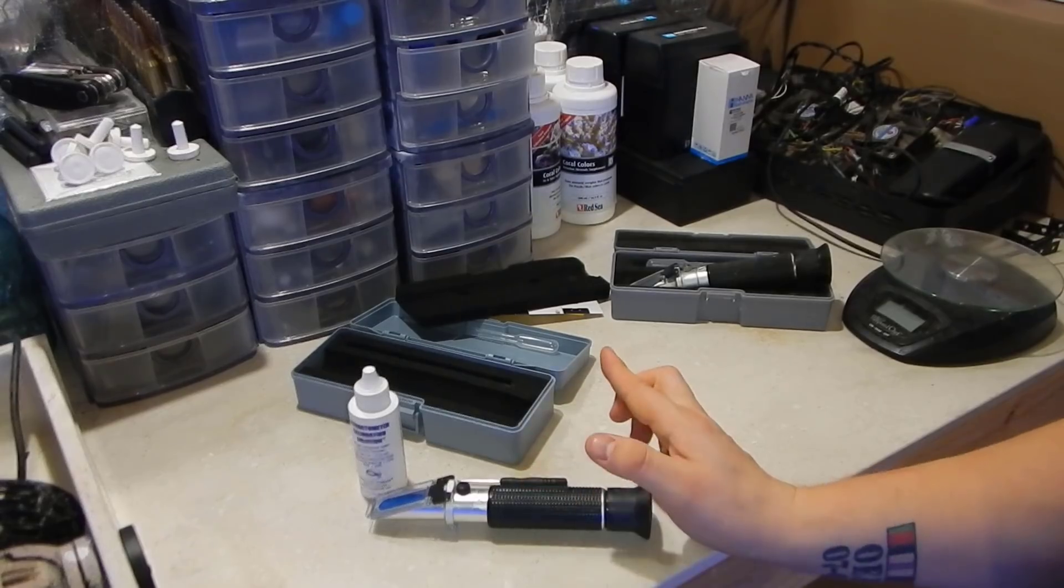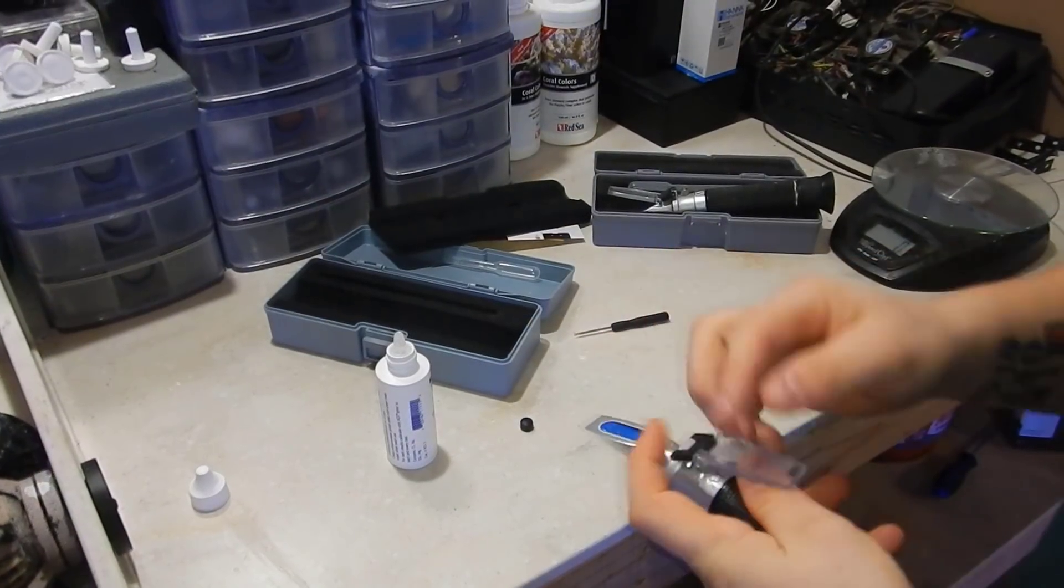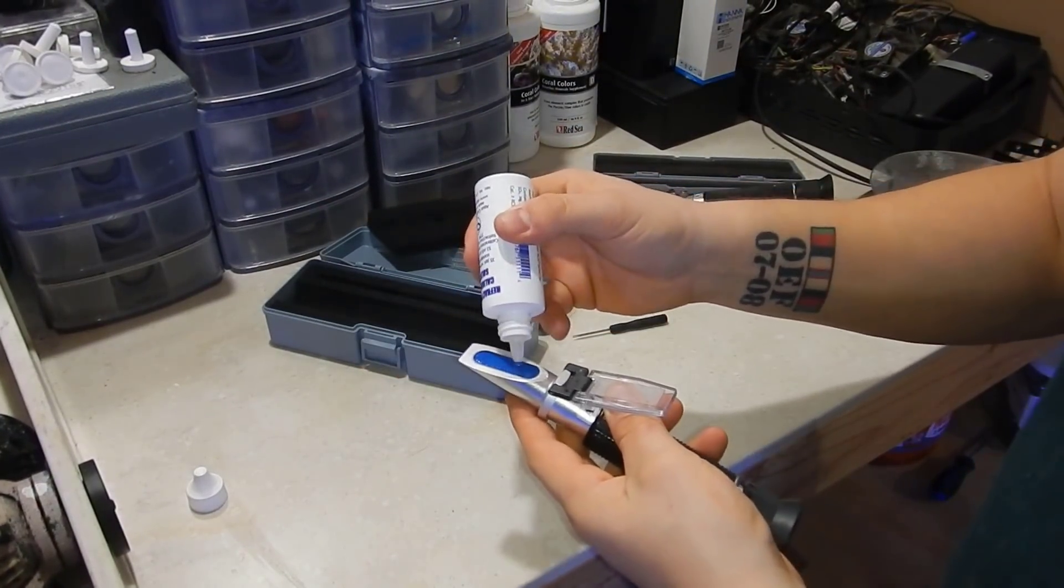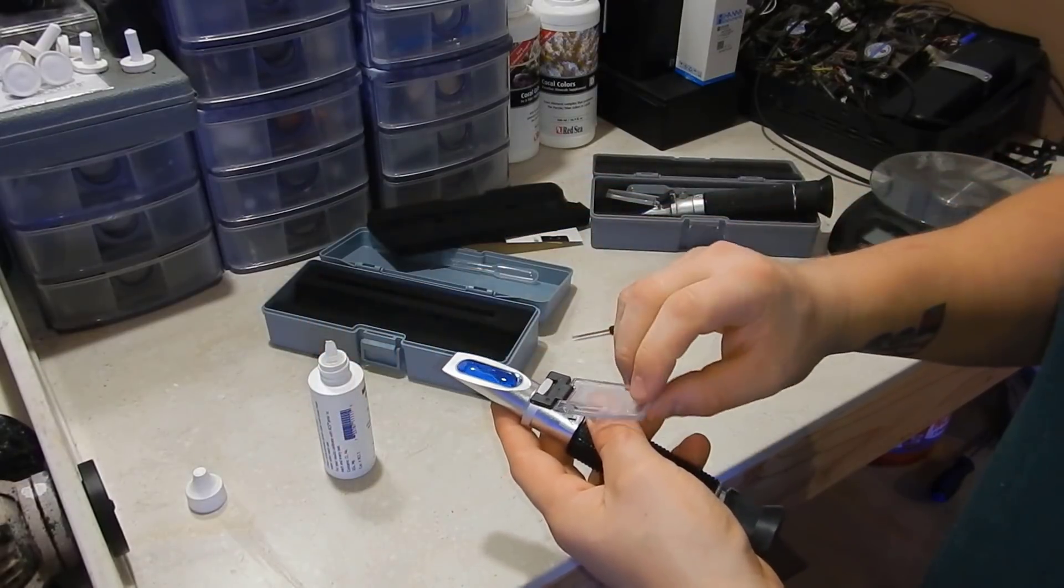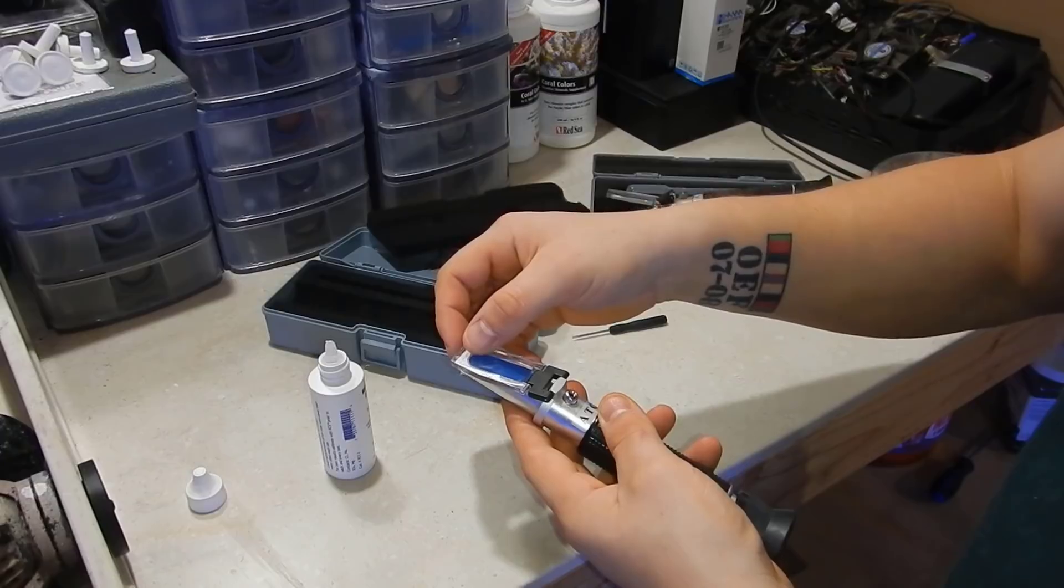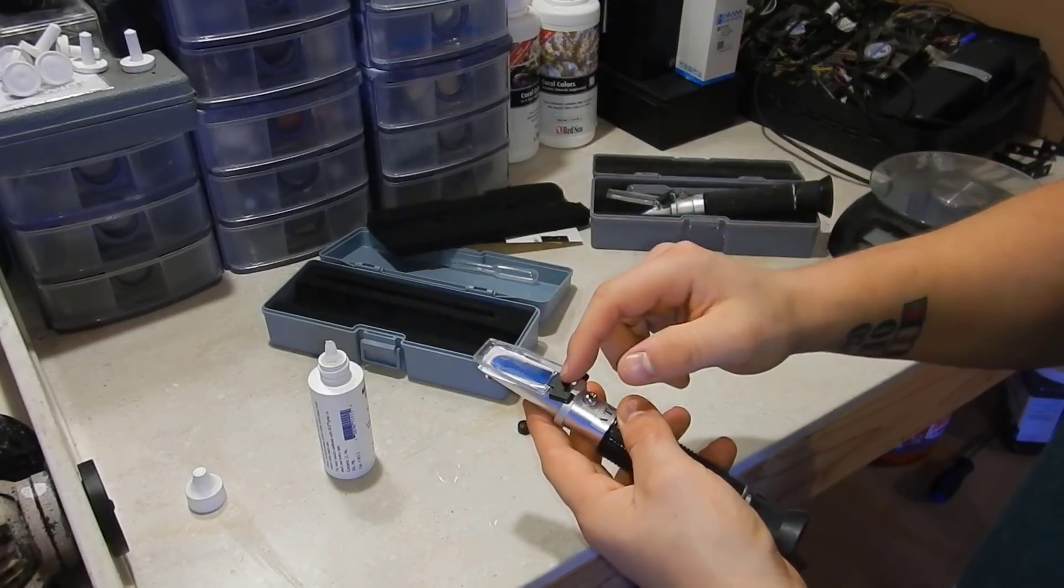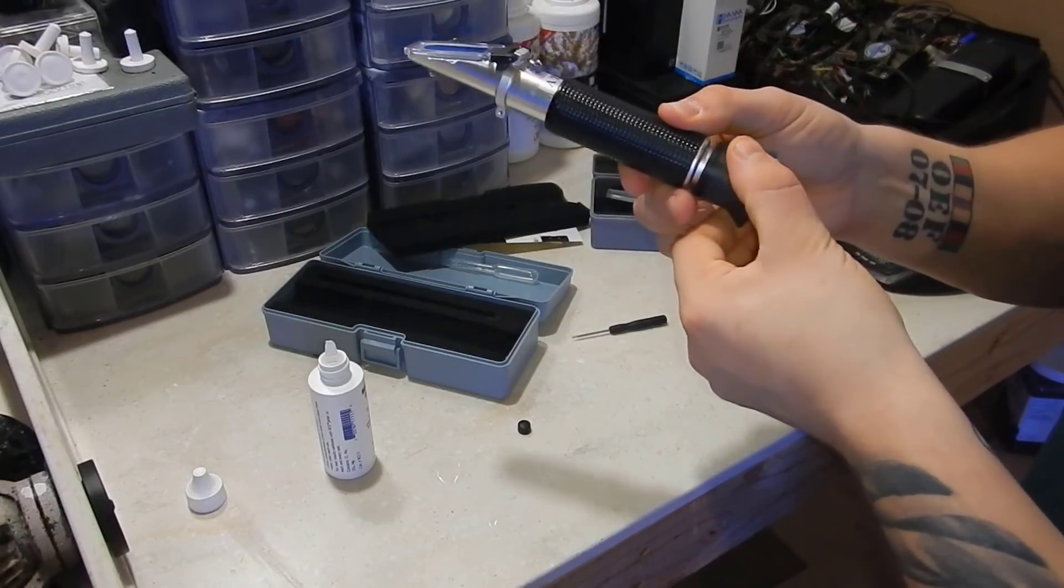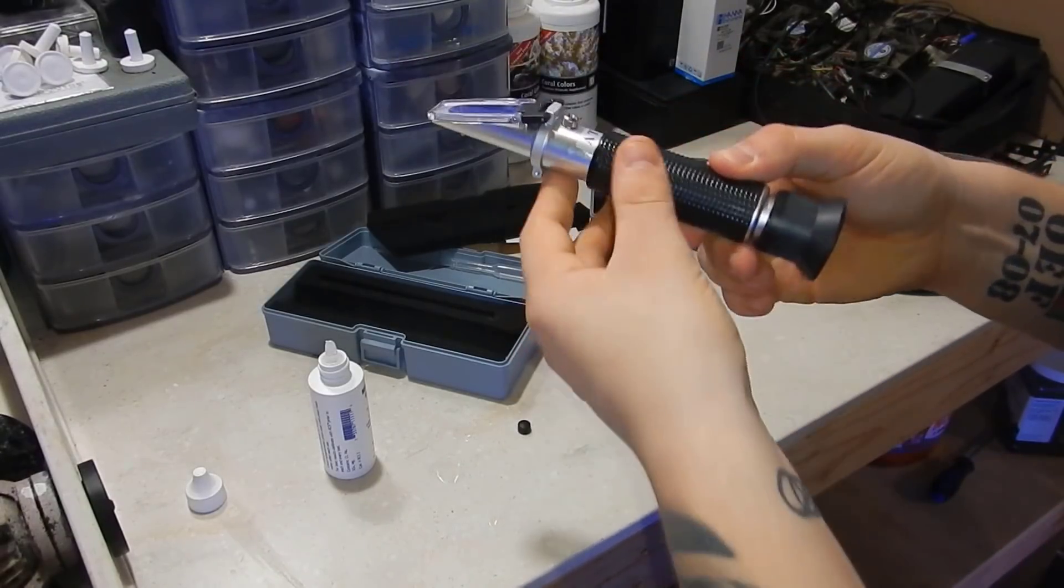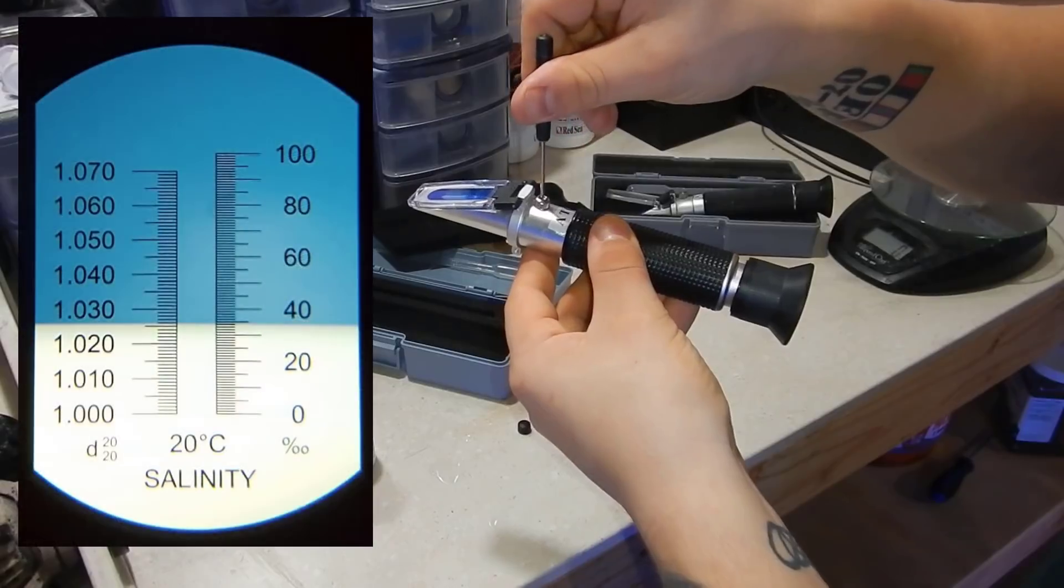Now enough of that, let's calibrate it. So the calibration is pretty simple on this. You're just going to take the solution, put it here on the lens to spread it out evenly. You don't need a ton of it because once you put the flap down it pretty much squirts out the side there as you can see. Make sure it's flat, then go ahead and hold it up to the light. Of course, adjust your focus here and then make your adjustment to 1.026 via this knob.